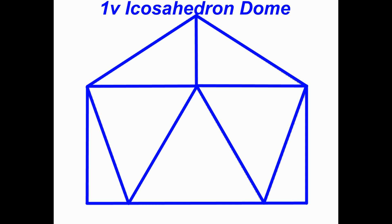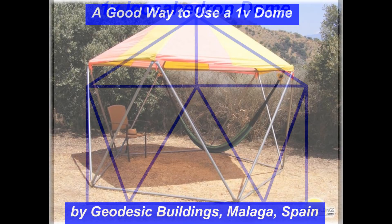When the icosahedron has the bottom section removed and is placed on the ground, it becomes a 1V, or 1 frequency dome. All of the struts in a 1V dome are the same length.